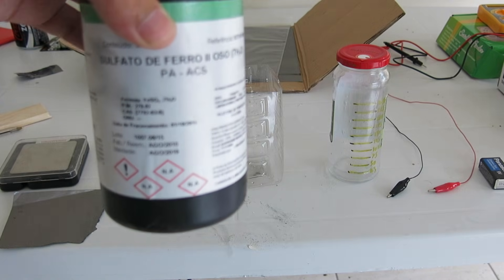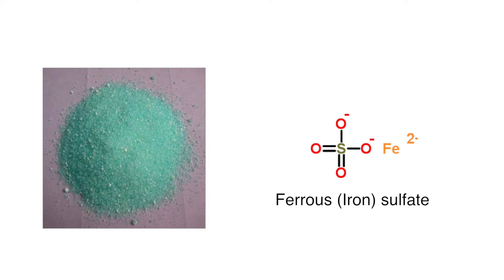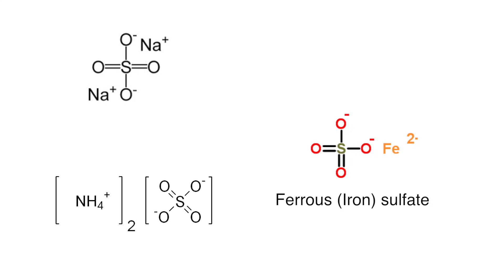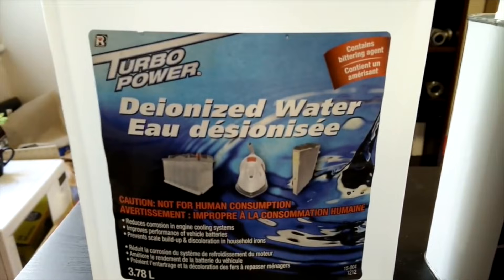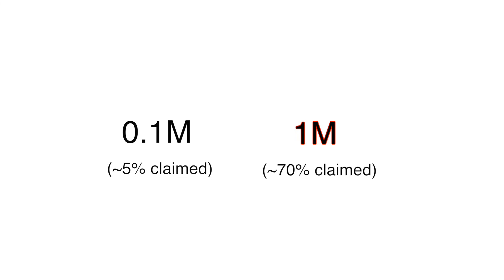Then we'll need an inorganic sulfate salt. Here I'm using iron sulfate, but sodium sulfate and ammonium sulfate should work as well. If possible, use the sodium and ammonium salts — the iron sulfate ended up contaminating my product with iron oxides, which needed to be removed afterwards. We'll also need some water, distilled or deionized as preferred, but filtered should also work. For this to work we need a solution whose concentration is somewhere between 0.1 and 1 molar. We used a 0.1 molar solution, but according to the paper this was based on, a 1 molar solution gives a higher yield.